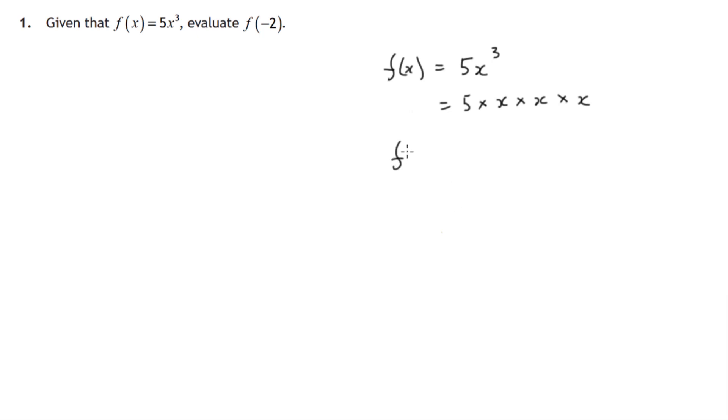So for instance, if we put 1 into this function, out would come 5 times 1 times 1 times 1. If we put 2 in, out would come 5 times 2 times 2 times 2. We're actually asked to put in negative 2 in place of x.